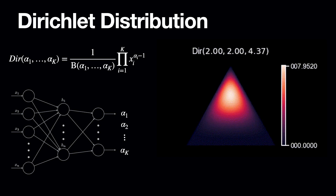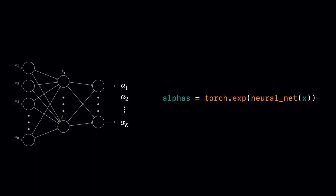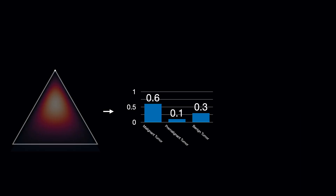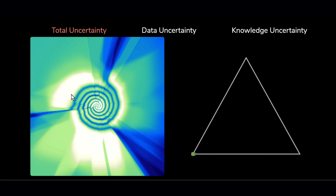There's just one quirk: the parameters of a Dirichlet have to be greater than zero. Hence, we can pass the output of a neural network through an exponential function to make sure all of the outputs are positive. As a quick recap, we can use a neural network to parameterize a Dirichlet distribution, samples from which are categorical distributions, and can be interpreted as predictions from individual members of an ensemble. Samples from these categorical distributions are then just classes. A neural network parameterizing a Dirichlet distribution in this context has been referred to as a prior network. With this network, we can emulate an ensemble of categorical distributions and distinguish between different types of uncertainty.